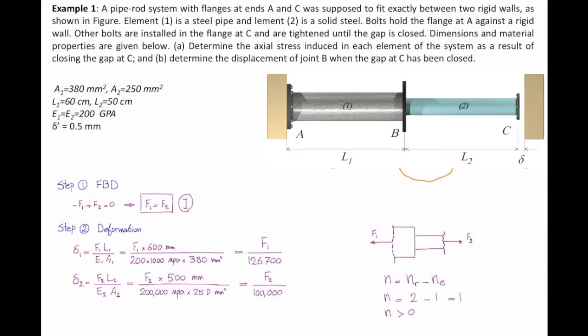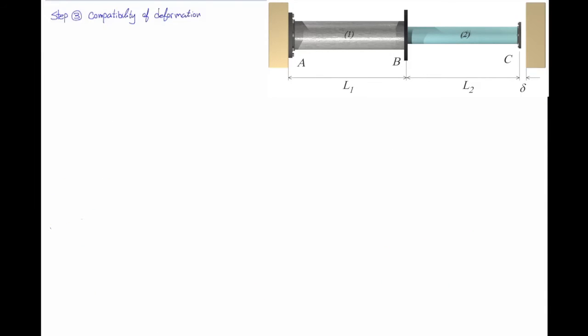So we have determined deformations as a function of internal force. The third step is the core of solving this problem. That is the compatibility of deformation. What is the compatibility of deformation in this case? What is the relation between delta 1 and delta 2? Which category is this one? 1, 2, or 3? It's 1. So I can say delta 1 plus delta 2 is equal to the gap and just plug the values.